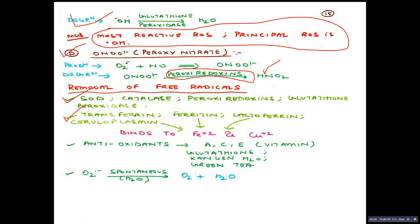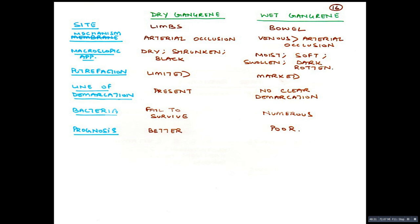The last topic: comparing dry gangrene and wet gangrene. Dry gangrene occurs in the limb due to arterial occlusion; the part is dry, shrunken, and black. Wet gangrene occurs in the bowel due to venous occlusion more than arterial; the part is moist, soft, swollen, dark, and rotten. Putrefaction is limited in dry gangrene but marked in wet gangrene. A line of demarcation is present in dry gangrene but absent in wet gangrene. Bacteria fail to survive in dry gangrene but are numerous in wet gangrene. Prognosis is much better in dry gangrene; prognosis is poor in wet gangrene.